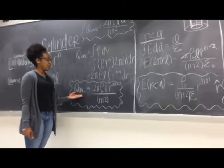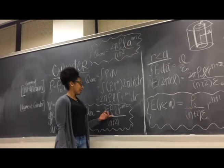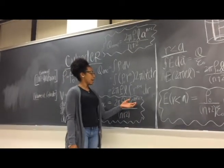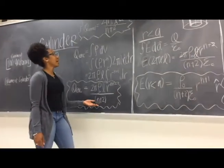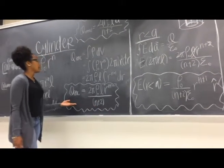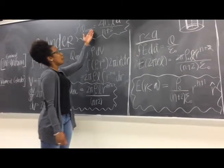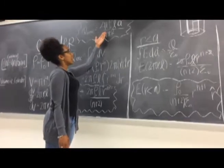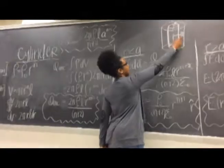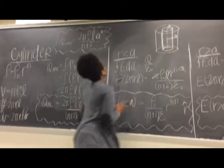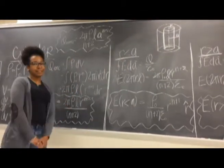The total charge enclosed is 2 pi rho-naught L times r raised to the n plus 2 power, divided by n plus 2. We can also express the total charge as 2 pi rho-naught L times A — which is now our new radius — raised to the n plus 2 power divided by n plus 2.